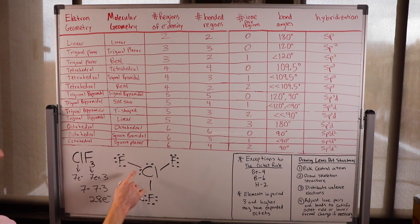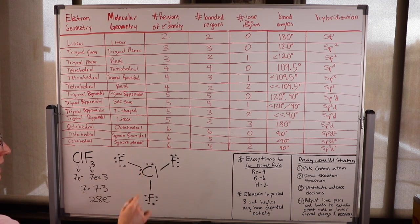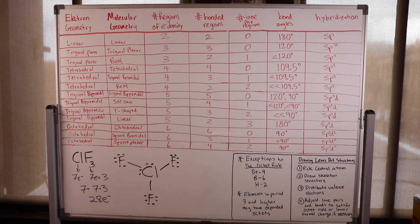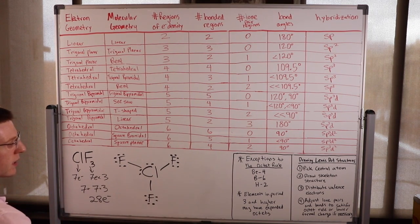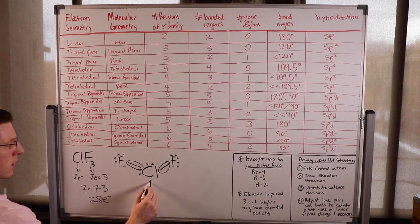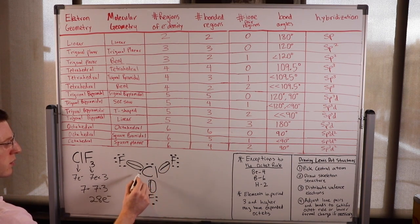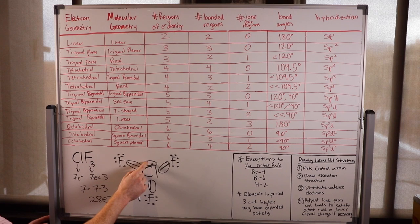Now chlorine has 10 electrons total — two from each of three bonds plus four from two lone pairs. This is an example of an expanded octet, an exception to the octet rule, because chlorine is in period 3 or higher. We have five regions of electron density: three bonded regions and two lone pair regions.